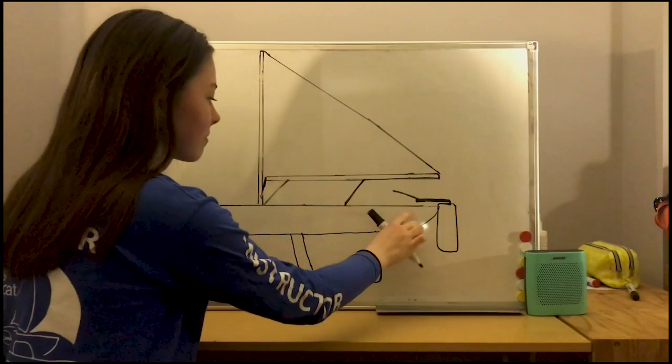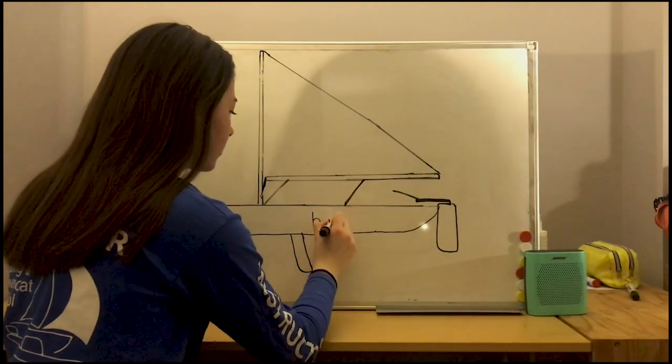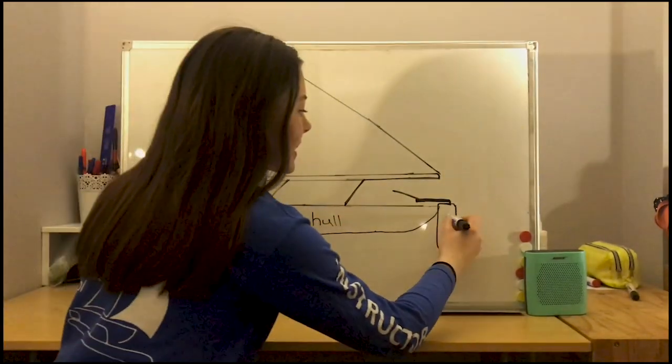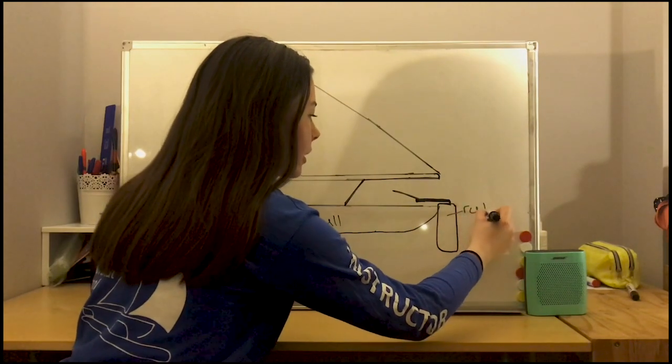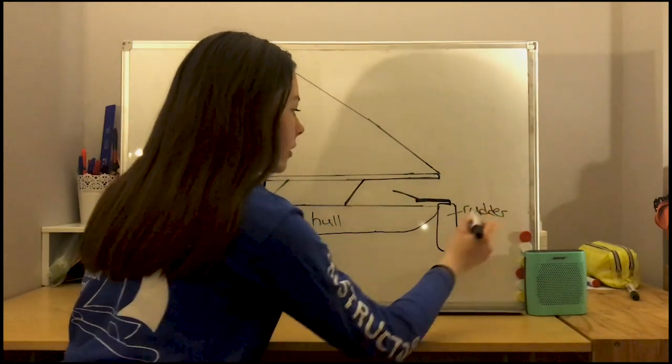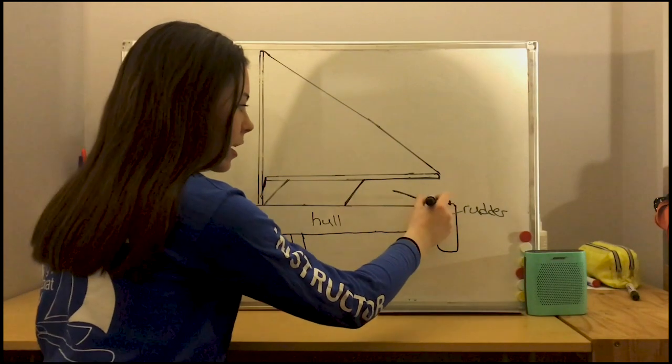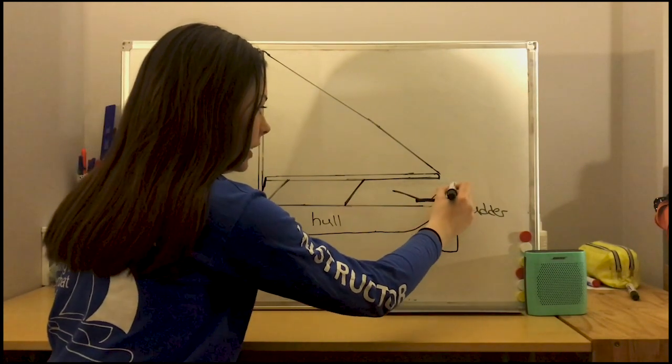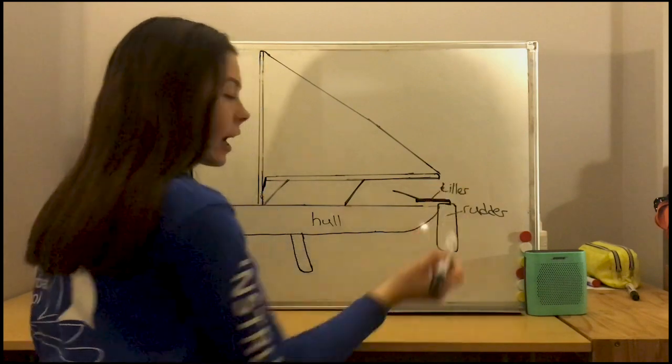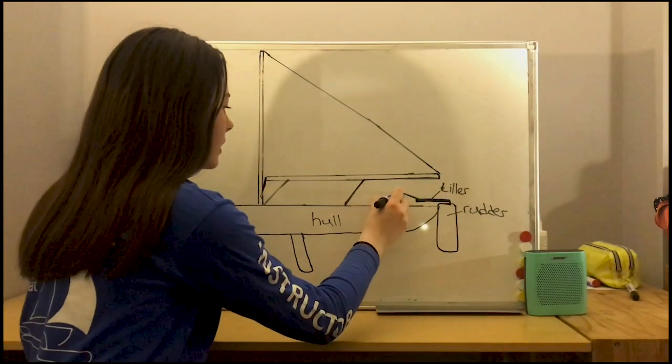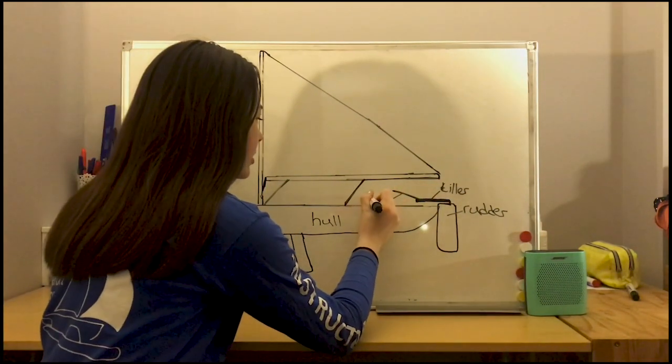So this bit, the hull. I hope everyone knows what this is, the rudder. Then here to steer the rudder we have the tiller and then the bit you hold in your hand, the tiller extension.